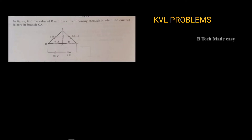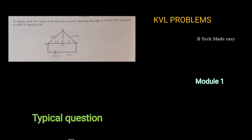Find the value of R. This is the resistance R, and the current flowing through it, when the current is zero in branch OA.